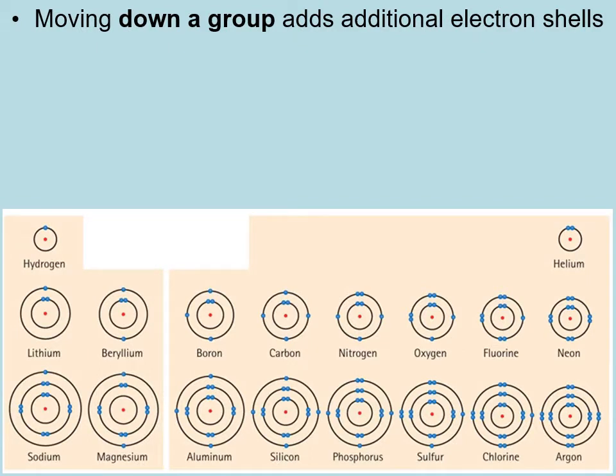Here's a sketch of some Bohr-Rutherford diagrams from the periodic table. In the nucleus there are protons, and the number of protons is represented by the atomic number. Hydrogen has an atomic number of one, so one proton; helium has two protons; lithium has three protons — and so on, left to right as we go across a period.